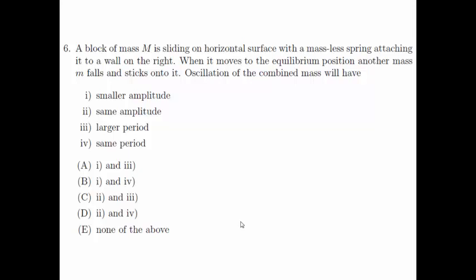we start with the energy of the oscillating system E, which is given by this equation, where k is the spring constant and x₀ is the amplitude of the oscillation.